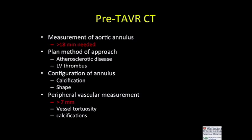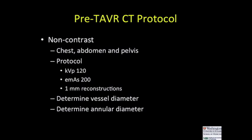We need to consider the aortic annular measurements — usually the cut point is anything greater than 18 millimeters to go forward with this procedure. We need to consider peripheral disease, whether it be left ventricular thrombus or atherosclerotic disease, directing whether it's a left ventricular approach or a peripheral vascular approach, configurations of the annulus, the amount of calcification, and peripheral vascular measurements — 7 millimeters being the cut point. I'm going to quickly go over protocols both with and without contrast, as well as non-contrast protocols to help the cardiologist size devices.